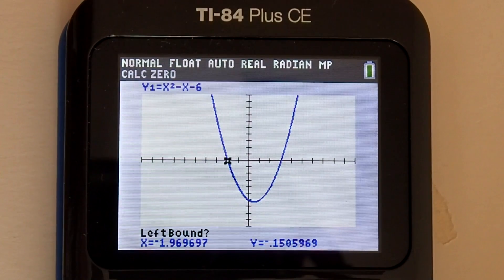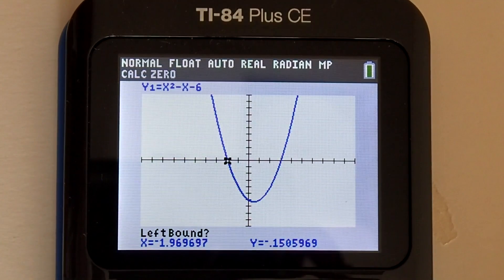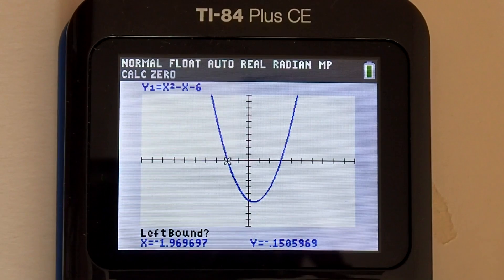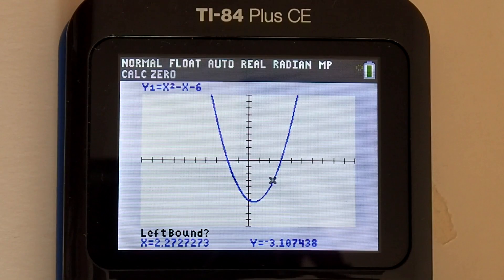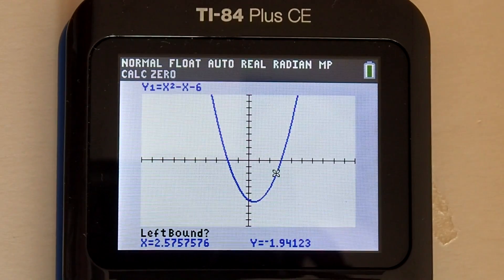On the bottom of the screen it says left bound. With the right arrow key, move the cursor to the left of where we think the other x intercept is located at x equals 3. Right there is ok. Press enter.